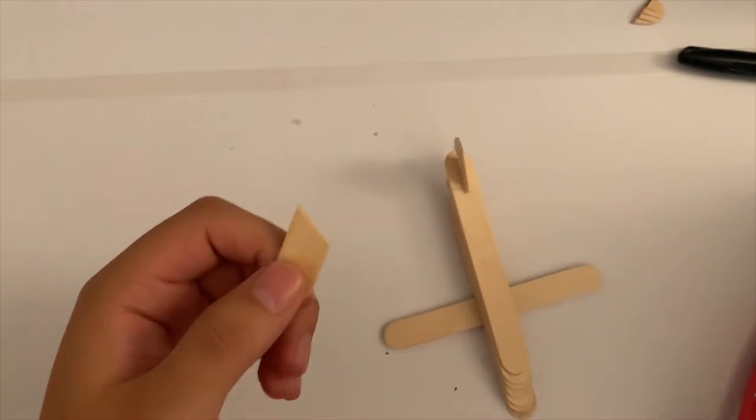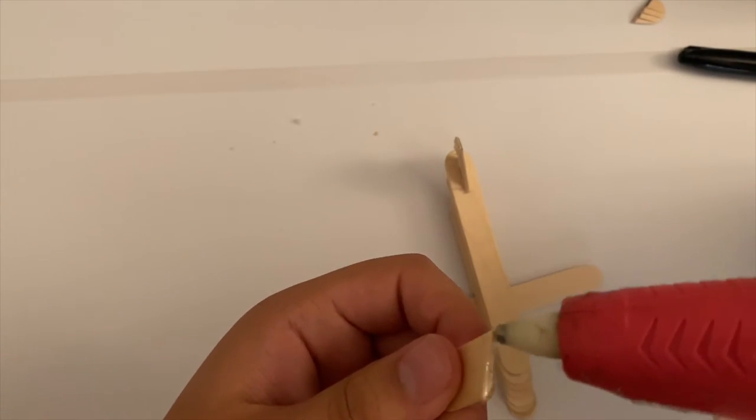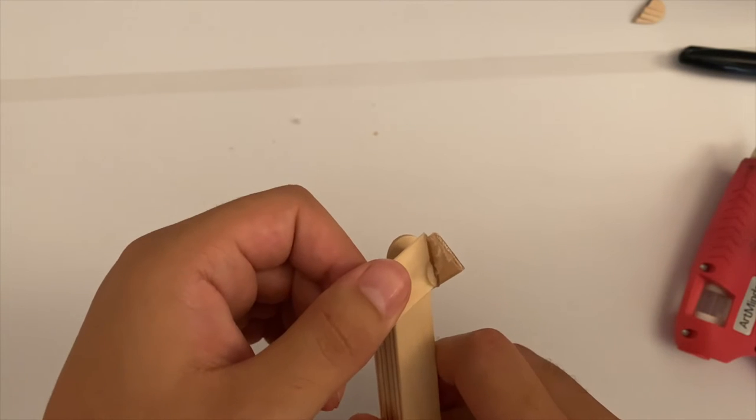Now with those pieces you have just cut, start to glue them onto the side of the back wing. This will make up the back flaps of your plane.